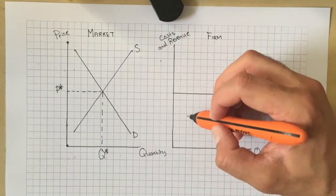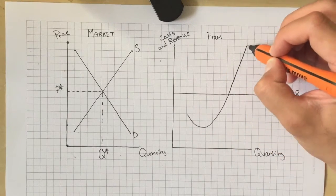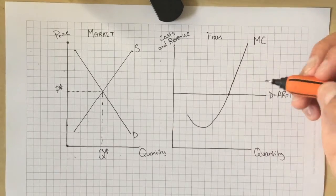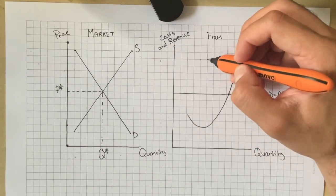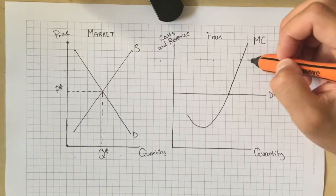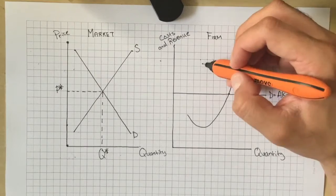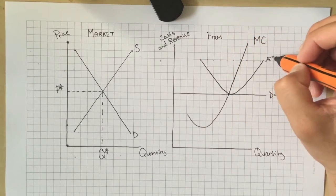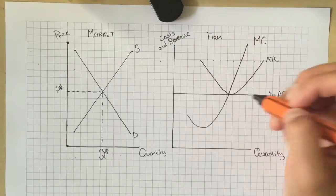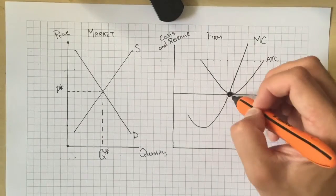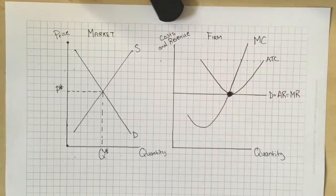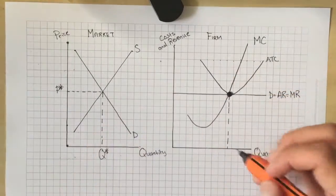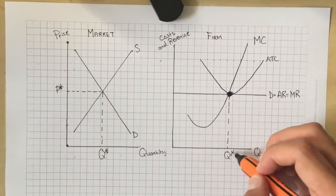I'm going to add in my marginal cost curve, upward sloping and looking like the Nike swoosh, and let it intersect. I'll also include my average total cost curve, having it hit the intersection of marginal cost and marginal revenue — hopefully at its lowest point. That gives us the firm producing at Q*.